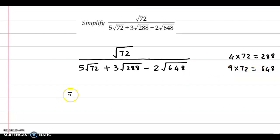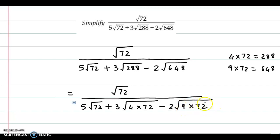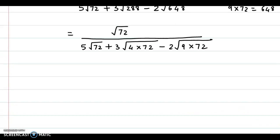So our next step would be, we have root 72 upon 5 root 72 plus 3 into, now we factorize this as 4 into 72 minus 2 times under root 9 into 72.